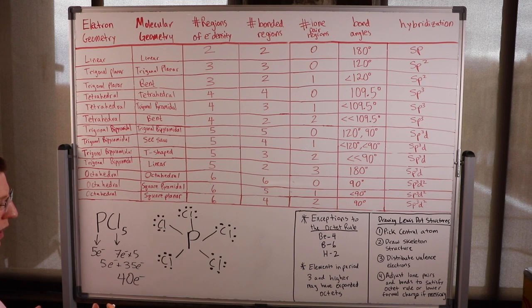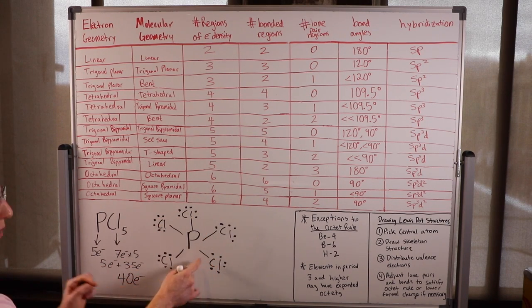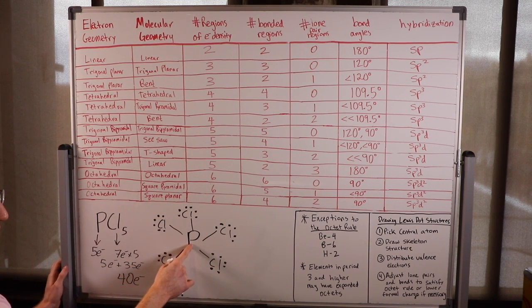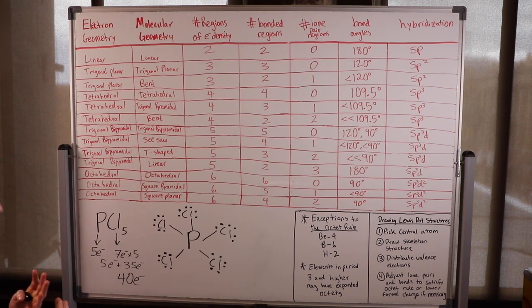Let's check everything's octet. The chlorines are all good — they all have 8. But phosphorus is an interesting case because it actually has too much: 10 electrons. Usually things only want 8.